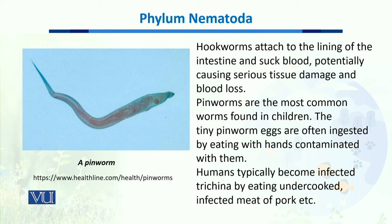Humans typically become infected with trichina by eating undercooked infected meat of pork or other animals, especially wild animals. If the meat is not properly cooked, trichina can be transmitted to humans and they start living as parasites, potentially inducing a huge range of diseases.